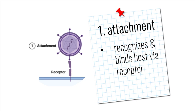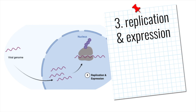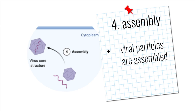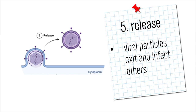At attachment, the virus recognizes and binds to a host cell through a receptor molecule on its cell surface. The next step is entry, where the virus or its genetic material enters the cell. Next is genome replication and gene expression: the viral genome is copied and its genes are expressed to make viral proteins. After that comes assembly, where new viral particles are assembled from the genome copies and viral proteins. Finally, in release, the completed particles exit the cell and can infect other cells.